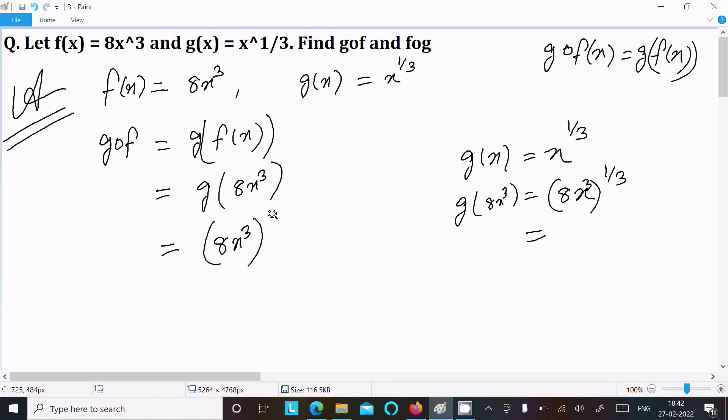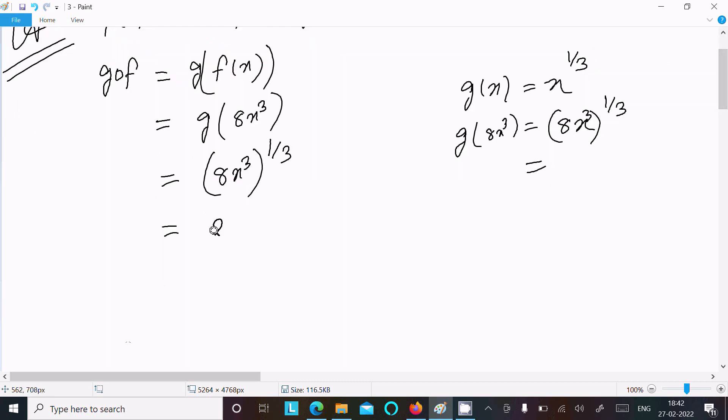This here we can write as 8x³ and 1/3, so this we can write as 2x. 2³ = 8, x³, the 3s cancel, then you can write gof = 2x. This is the answer for gof.